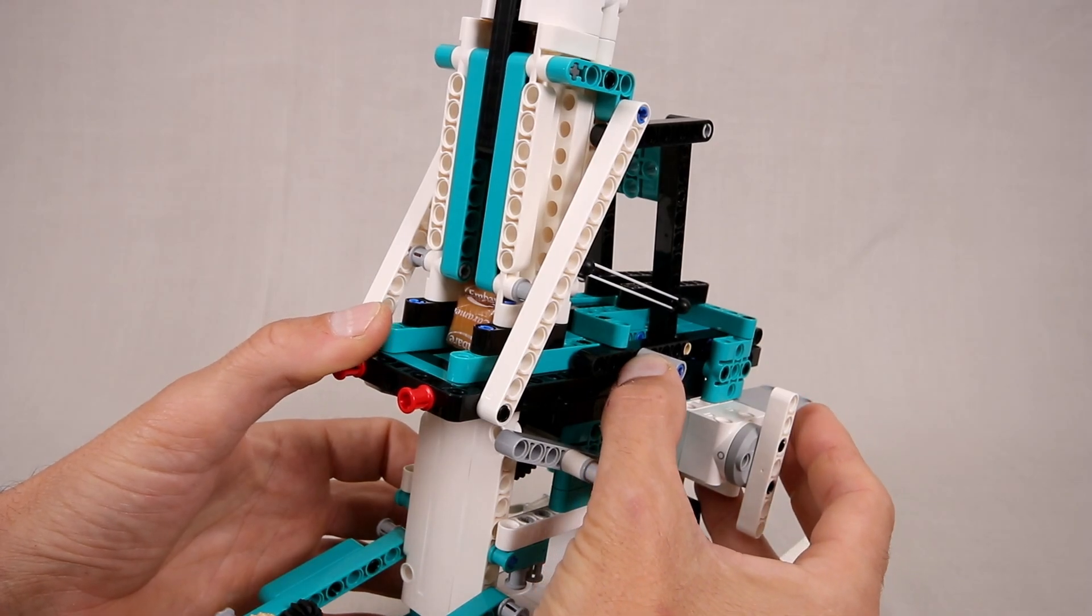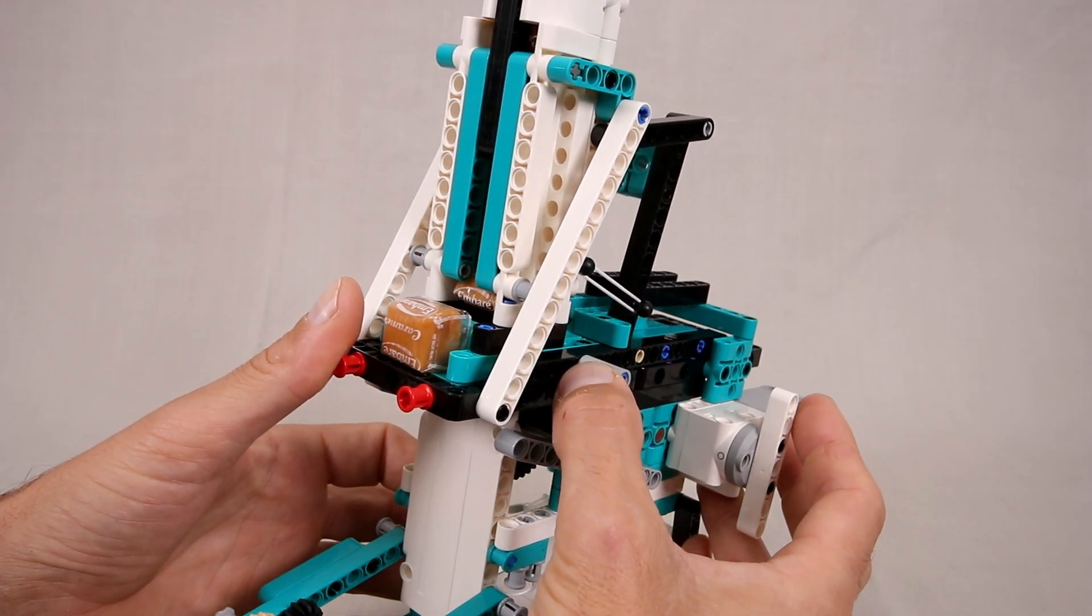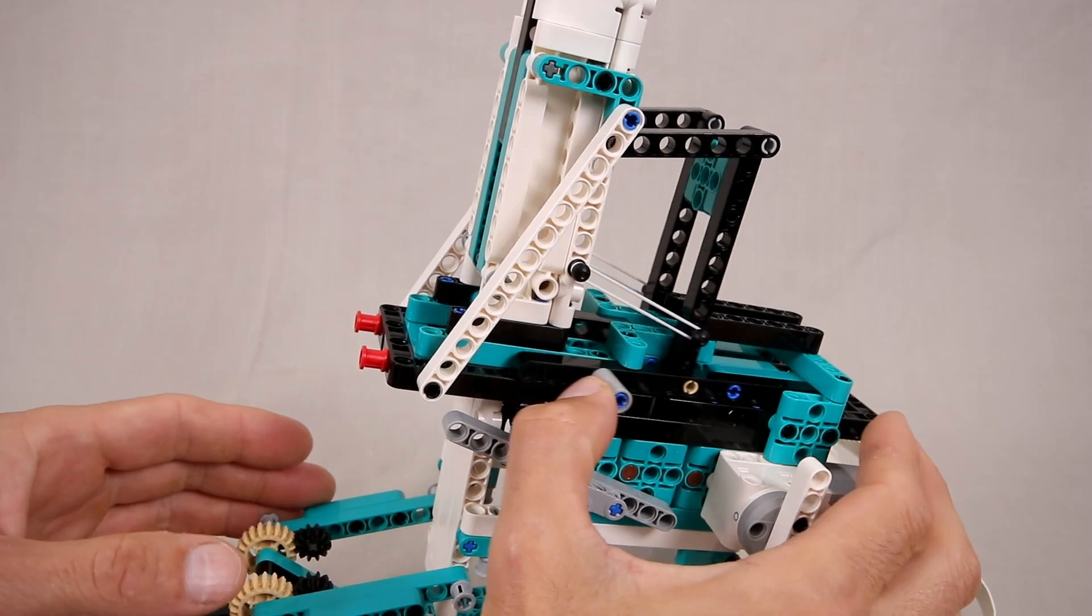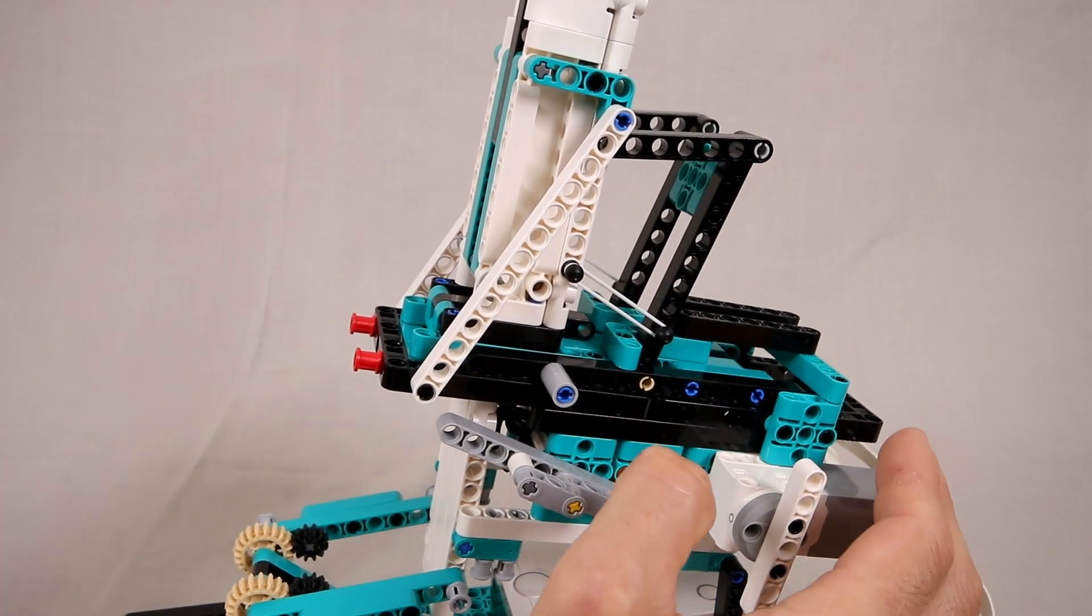When the slider is released the rubber bands will pull it forward and it will push the bottom caramel out the front. And if we release it quickly it will launch the caramel.